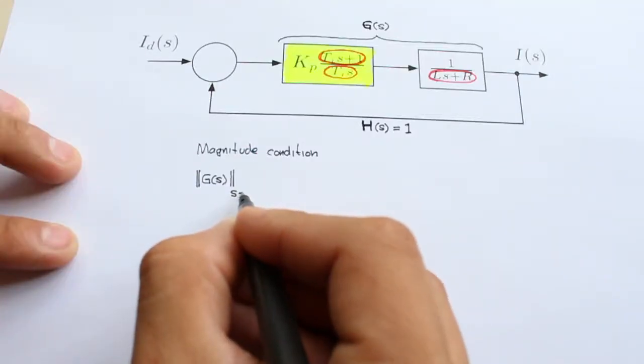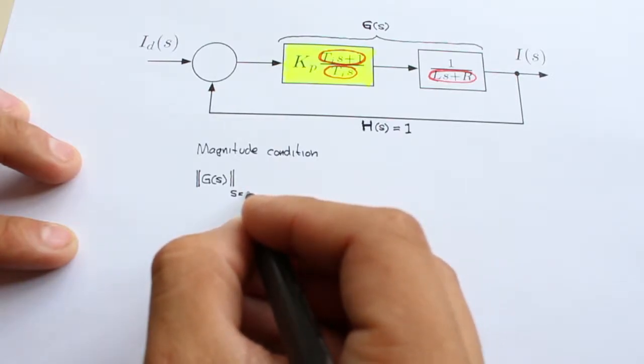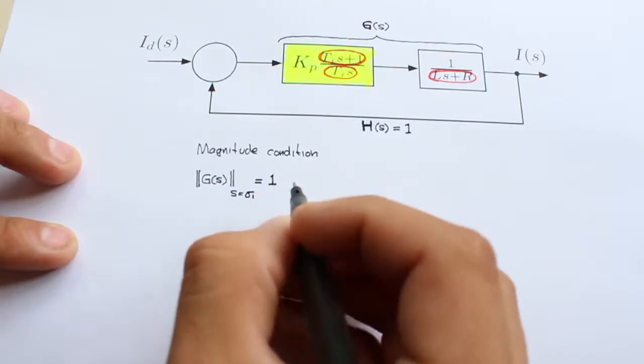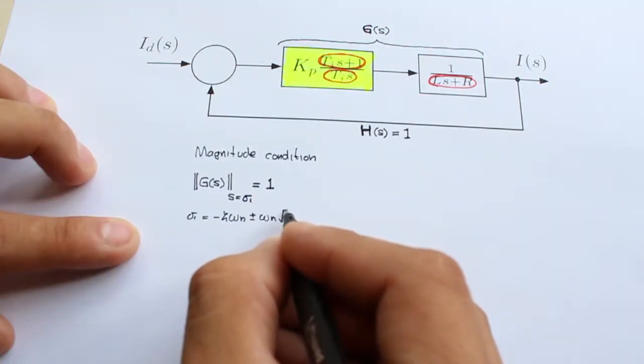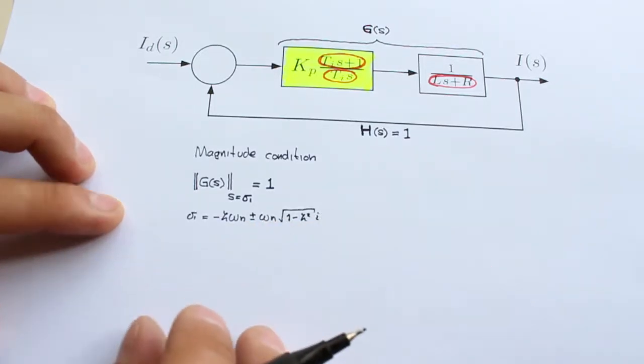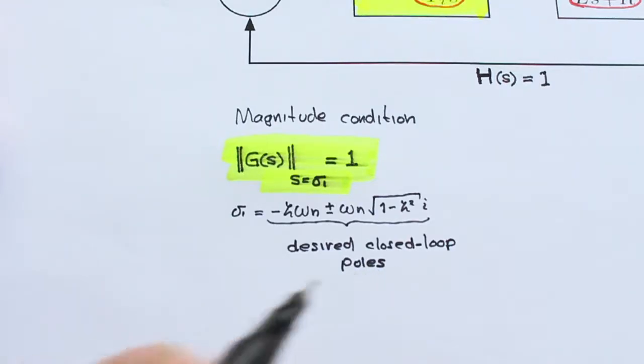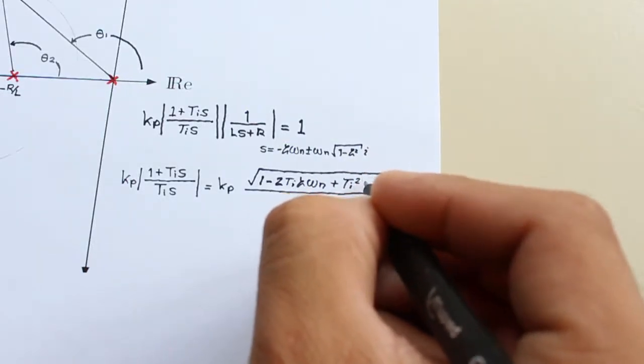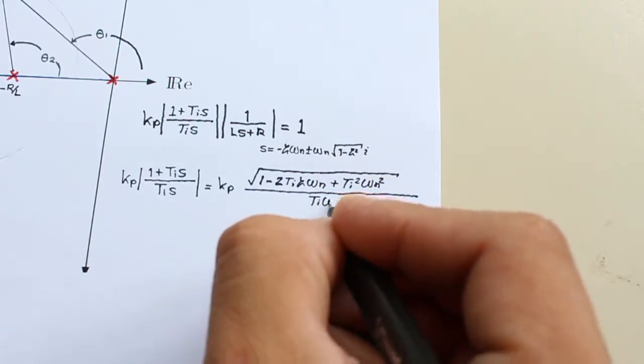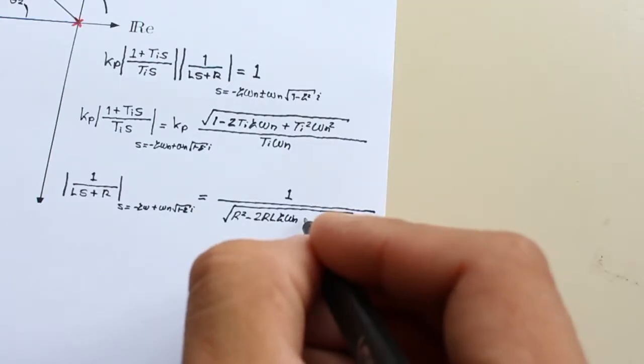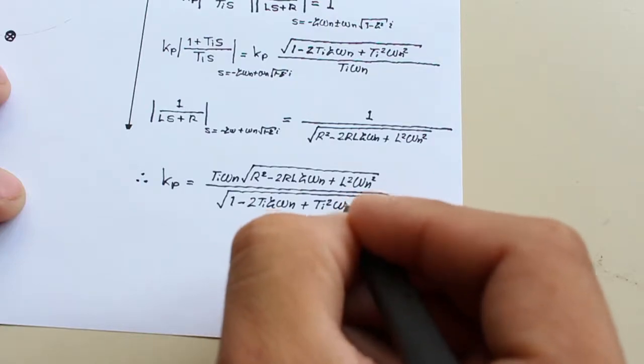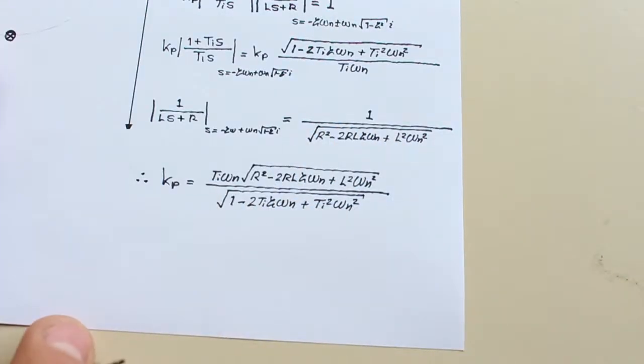The magnitude condition establishes that the norm of the open-loop transfer function must be unity at every point along the root locus. In other words, we have to find out the gain to make the closed-loop poles move until the desired position, which must satisfy the desired requirements. To do that, we compute first the norm of the controller transfer function evaluated at the point of interest, which may be written as follows. Next, we apply the same procedure to compute the norm of the plant. The last part is to clear the kp variable, and that's all.